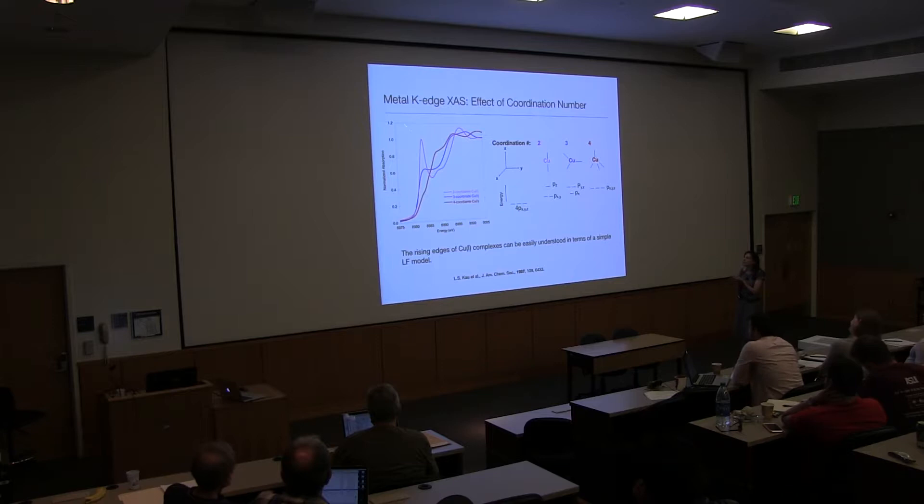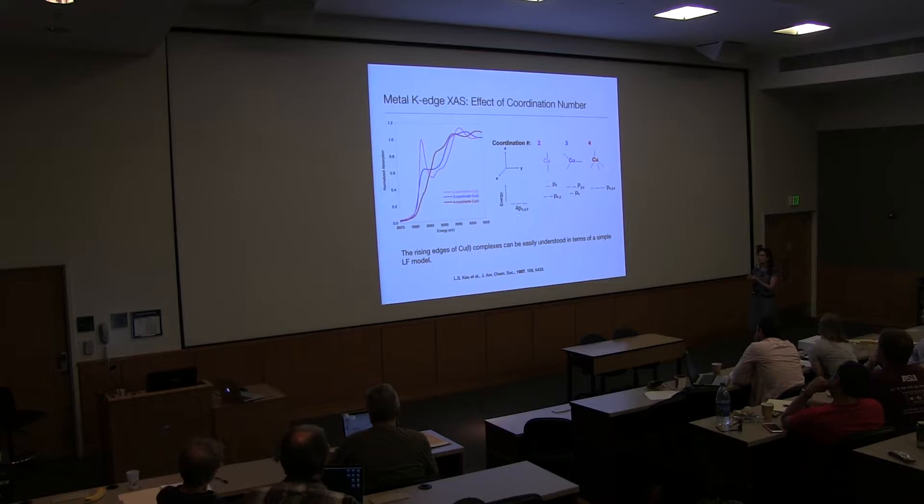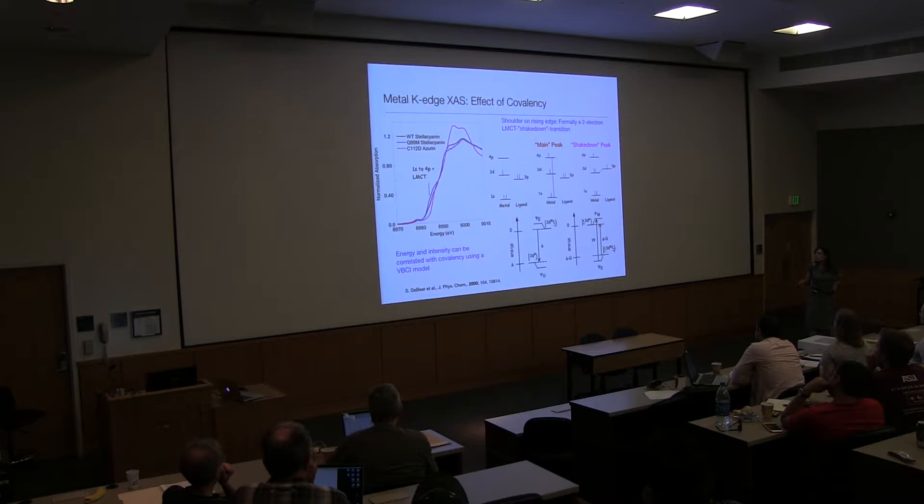The other thing that edges can be dependent on are coordination number. And here I chose probably the nicest example. It doesn't always work out this cleanly, but copper-1 has particularly beautiful edges that are highly coordination dependent. And this has been nicely used in bio and inorganic chemistry to determine the coordination number around copper-1. And of course, this becomes a unique method to look at things like copper-1 and zinc that aren't otherwise readily accessible. And so what we're seeing here now, of course, is copper-1 has a filled 3D-10 ground state. And so these transitions represent 1S to 4P transitions.